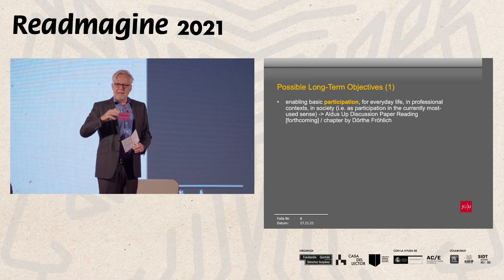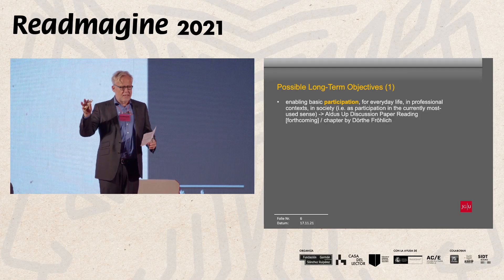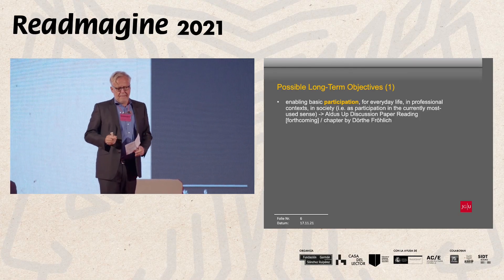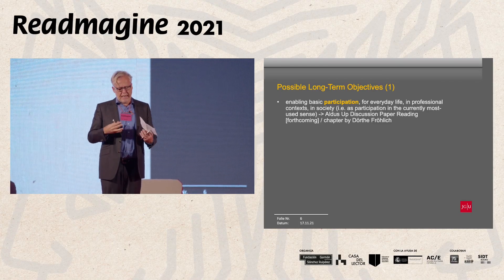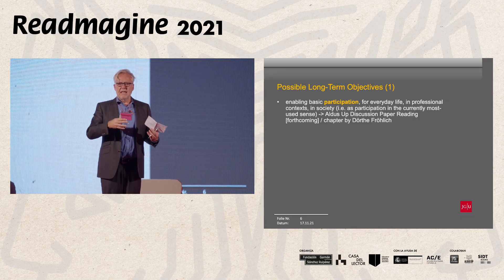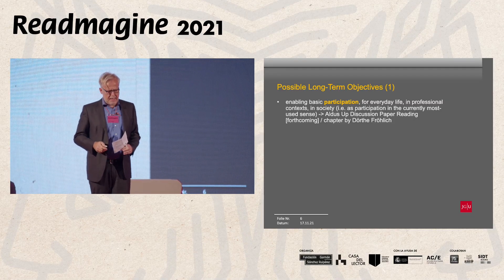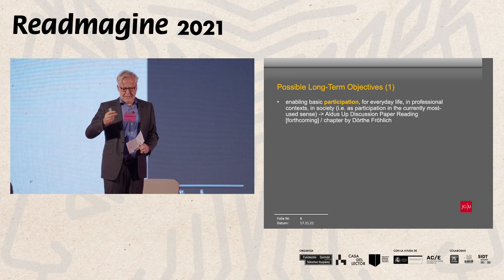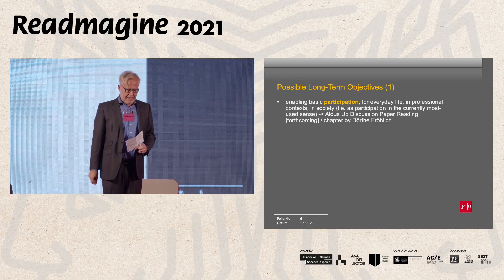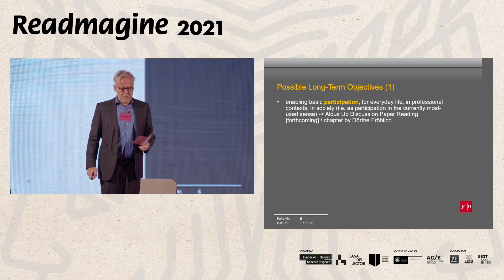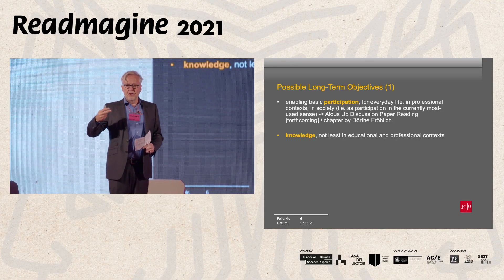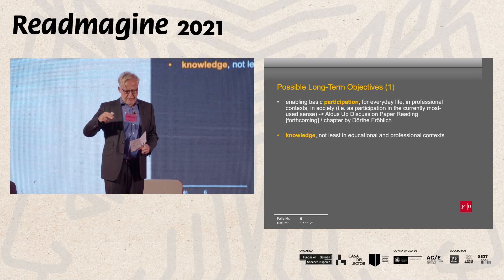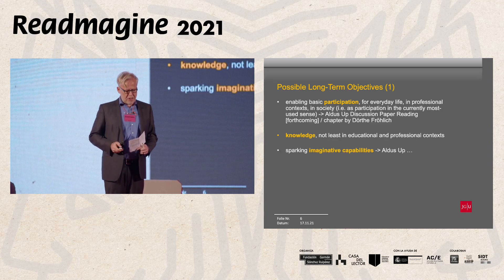For most of the dimensions — though there may be desiderata — we have looked at all the studies that ensure us these targets have been seen by reading researchers in the past. This is one of the chapters of the digital discussion paper on reading we are preparing, written by my colleague Dörte Fröhlich. Another possible long-term objective for someone reading is, of course, to gain knowledge, not least in educational and professional contexts.